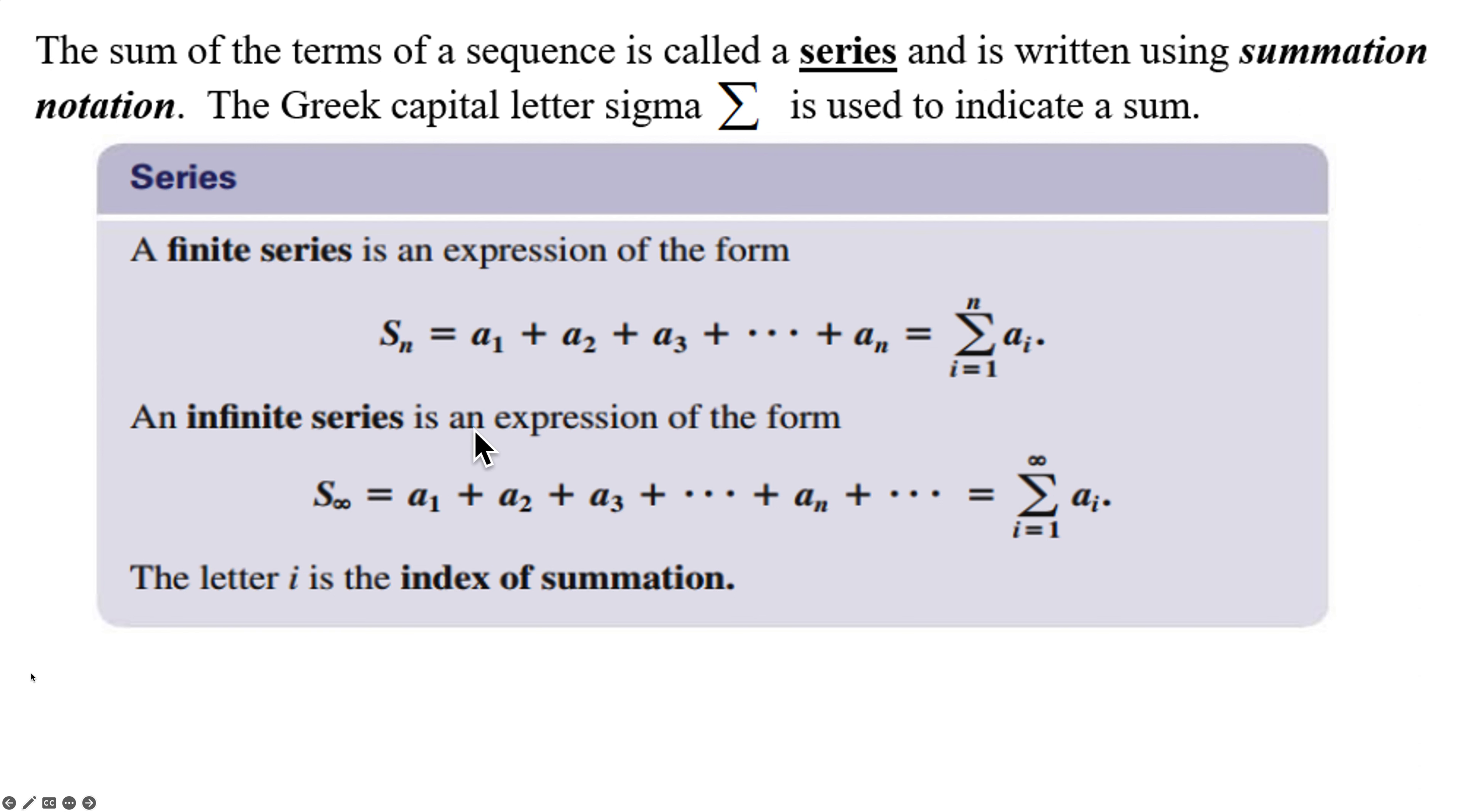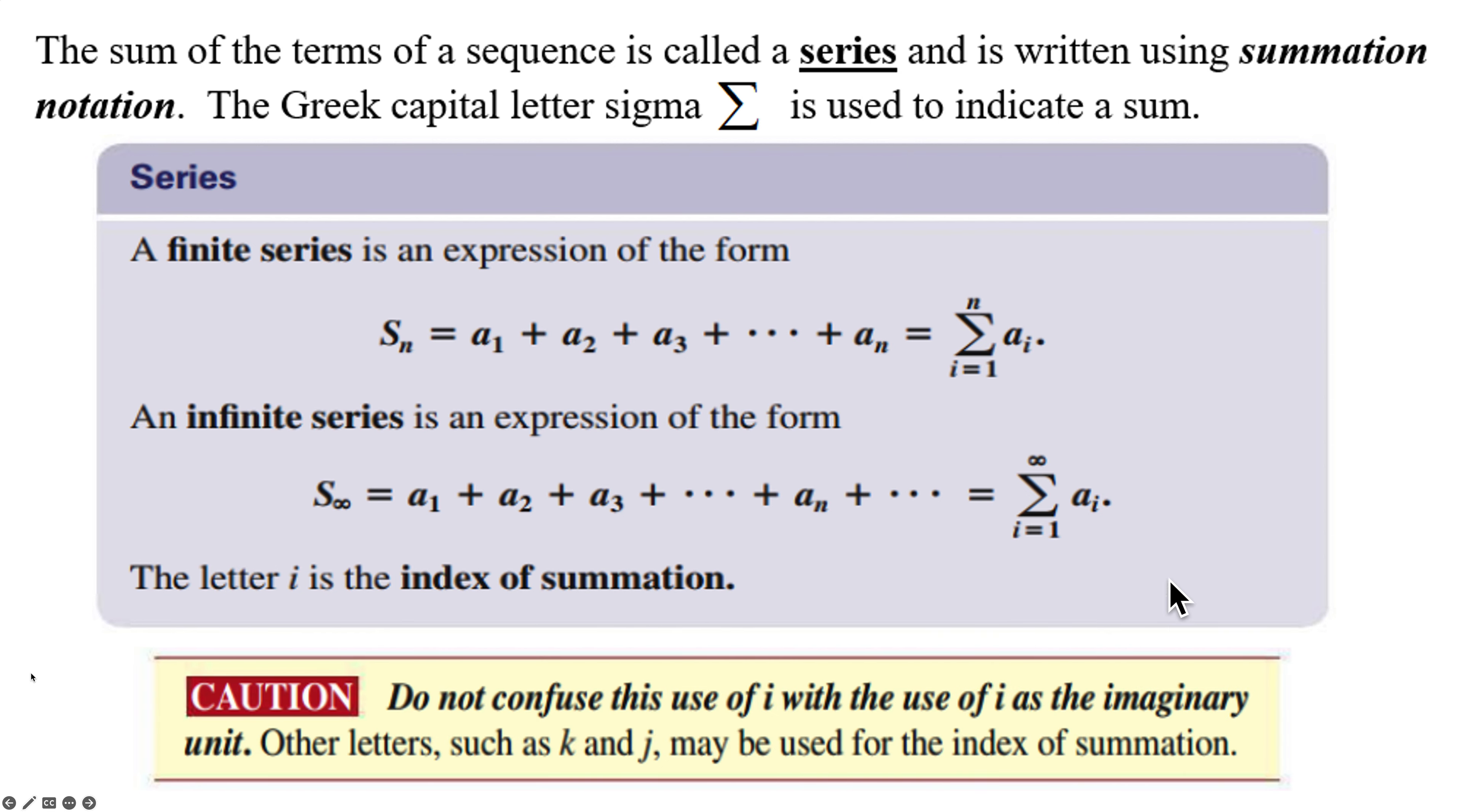We can have an infinite series. So that's S sub infinity. Now we're going to add out to an infinite number of terms. Don't think that we're going to do that and never end. It will be series that will converge that we can add together. And your summation notation will have infinity as its upper limit. Now the i is your index here. Now if i throws you off making you think it's an imaginary number, then I like to use K or J, something completely different.